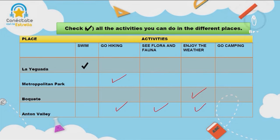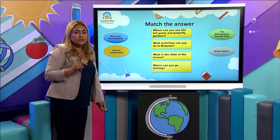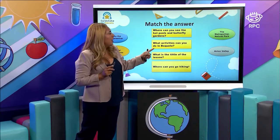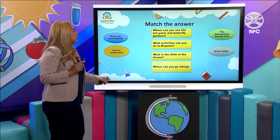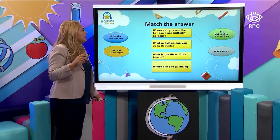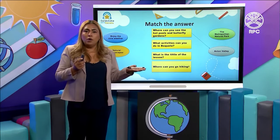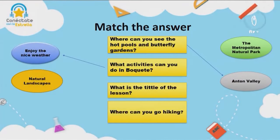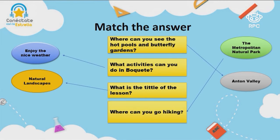Now we have another activity where you have to match the answer to the question. We have: enjoy the nice weather, natural landscape, Anton Valley, and the Metropolitan Natural Park. Where can you see hot pools and butterfly gardens? In the Anton Valley. What activities can you do in Boquete? You can enjoy the nice weather. What is the title of the lesson? The title is Natural Landscapes. And where can you go hiking? To the Metropolitan Natural Park. Excellent — you did an excellent job.